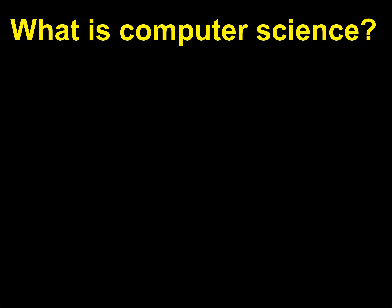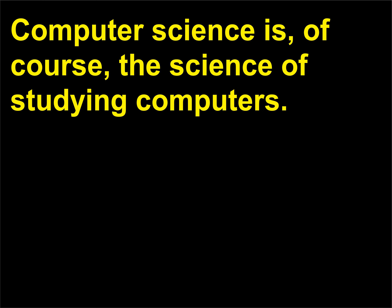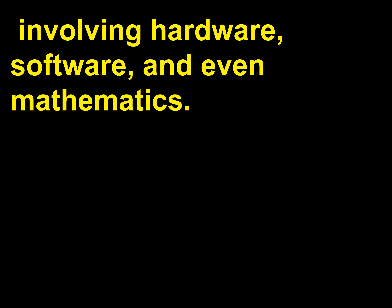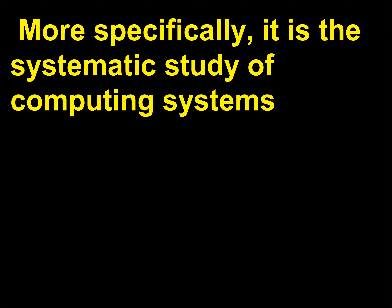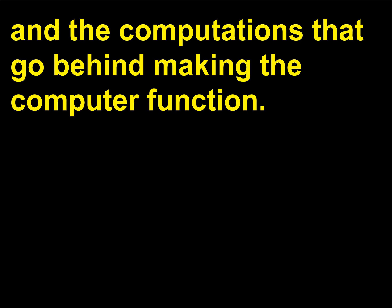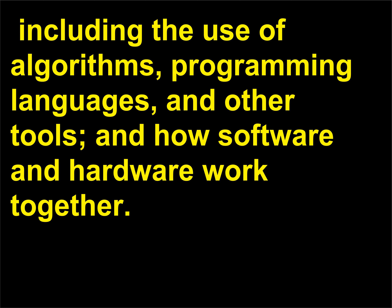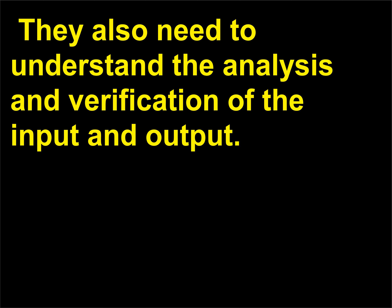What is computer science? Computer science is, of course, the science of studying computers. It is the study of computation and information processing, involving hardware, software, and even mathematics. More specifically, it is the systematic study of computing systems and the computations that go behind making the computer function. Computer scientists need to know computing systems and methods, how to design computer programs — including the use of algorithms, programming languages, and other tools — and how software and hardware work together. They also need to understand the analysis and verification of the input and output.